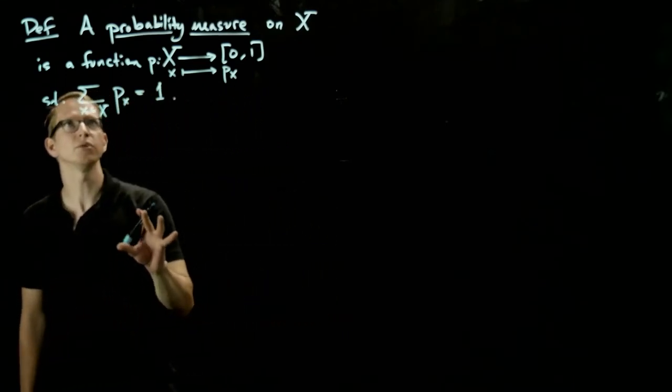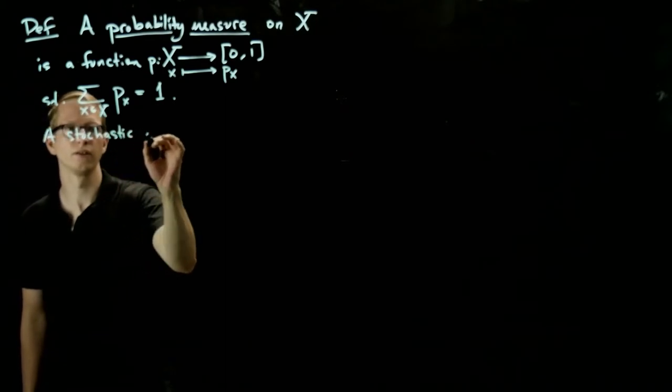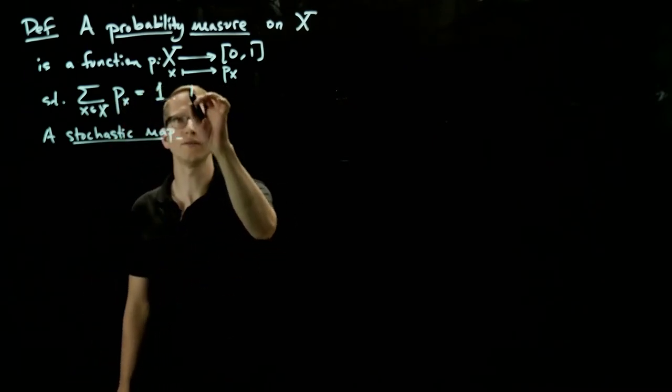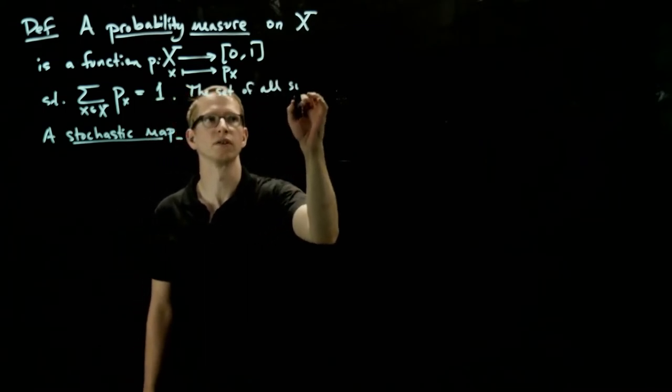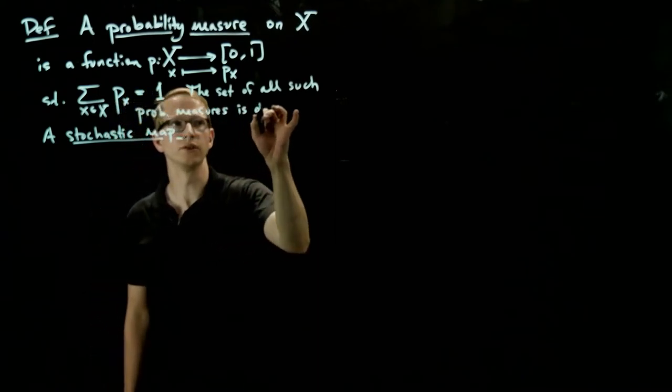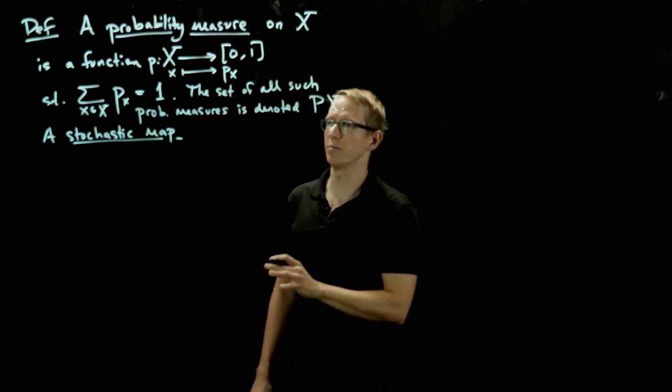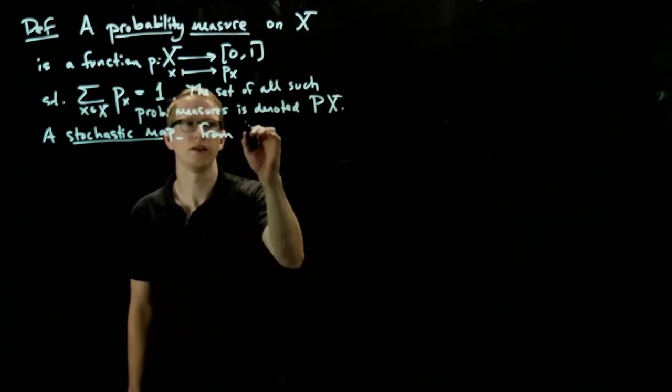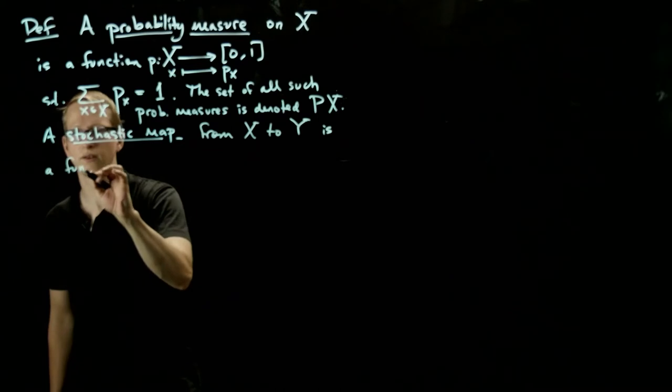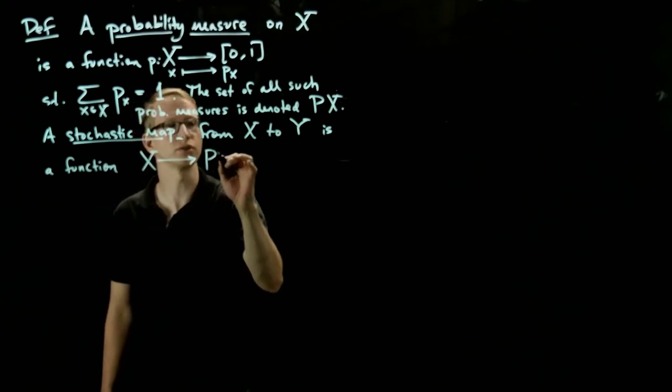And a stochastic map is something very similar to this. Let me set some more notation. The set of all probability measures on X is denoted by PX. So a stochastic map from X to Y, another finite set, is a function from X to probability measures on Y.